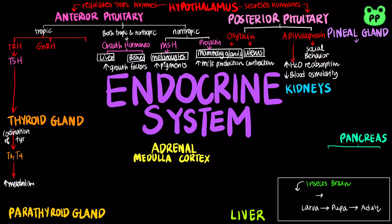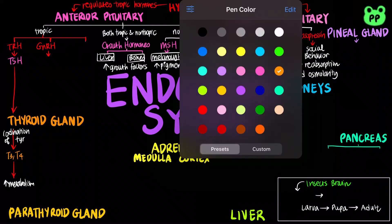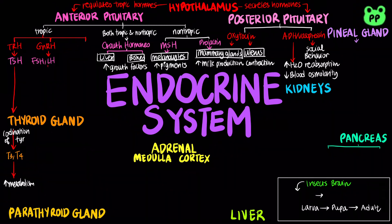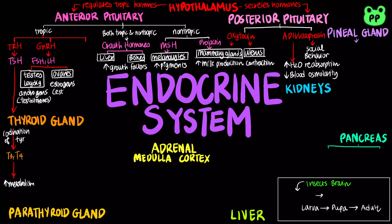The hypothalamus also secretes gonadotropin-releasing hormone, or GnRH, which stimulates the anterior pituitary to release follicle-stimulating hormone, or FSH, and luteinizing hormone, or LH. FSH and LH stimulate the gonads, or reproductive organs. In males, these hormones stimulate the Leydig cells in the seminiferous tubules of the testes to synthesize androgens, mainly testosterone, which stimulates development and maintenance of the male reproductive system and male secondary sex characteristics. In females, LH and FSH stimulate the ovaries to produce estrogens, most importantly estradiol, which are responsible for maintaining the female reproductive system and developing female secondary sex characteristics. They also stimulate progestins, which include progesterone, to maintain the uterus. More details about the hormone cascades of FSH and LH will be covered in future videos discussing reproductive systems.